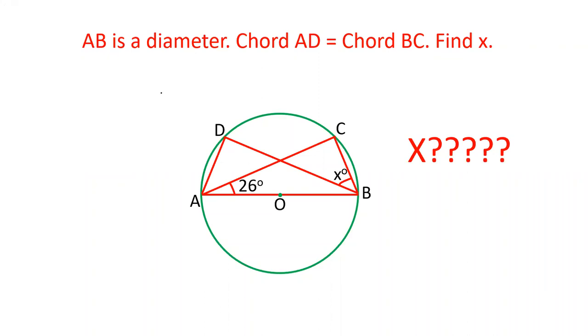AB is the diameter of the circle. Angle BAC is given as 26 degrees. We have to calculate angle DBC. It is also given that chord AD equals chord BC.